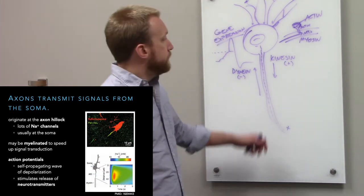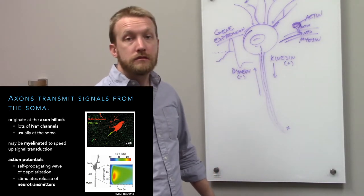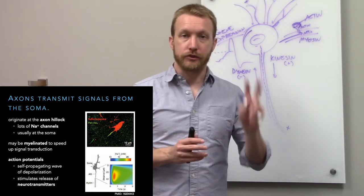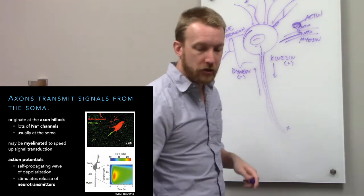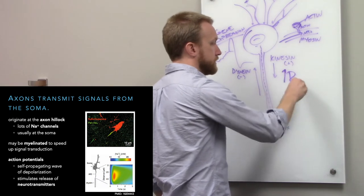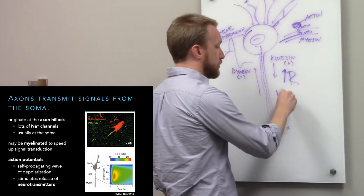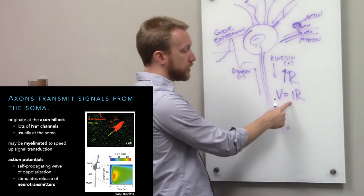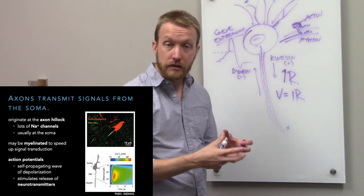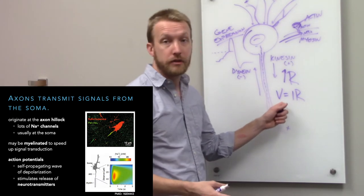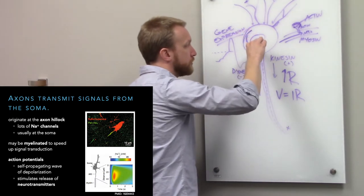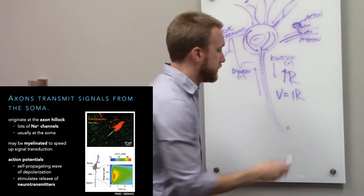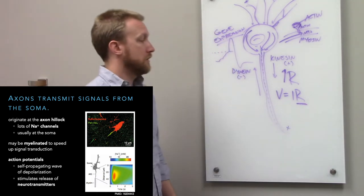If we do excite the cell, the action potential travels down the axon. The axon is a wonderful place to generate an action potential for two good reasons. First, it's much thinner than the cell body, so it has increased resistance. By Ohm's Law — V equals current times resistance — the higher the resistance, the easier it is to build up a charge. All that charge moving through the cell body essentially concentrates in the narrow axon, amplifying because of the higher resistance.